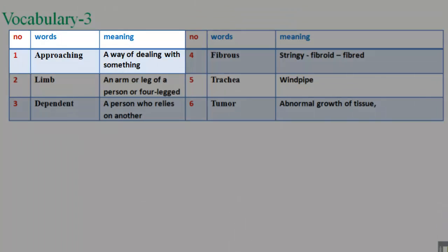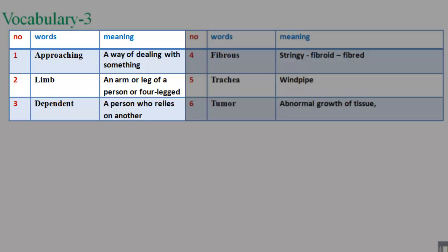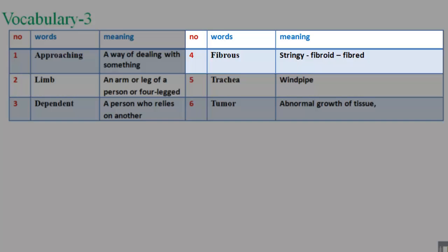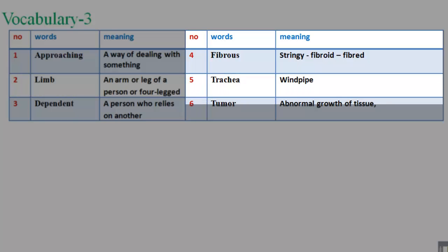Vocabulary 3. Number 1. Approaching: a way of dealing with something. Number 2. Limb: an arm or leg of a person or four-legged animal. Number 3. Dependent: a person who relies on another. Number 4. Fibrous: stringy, fibroid, fibred. Number 5. Trachea: windpipe. Number 6. Tumor: abnormal growth of tissue.